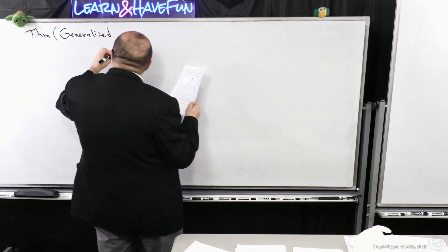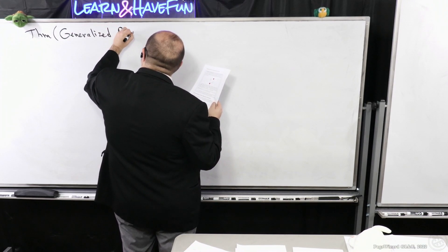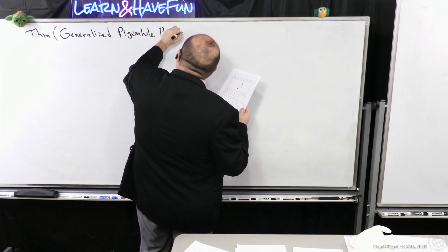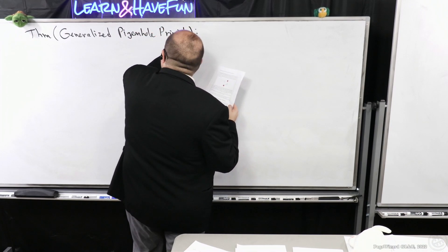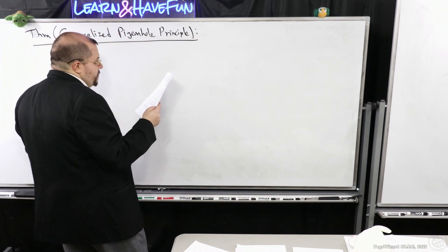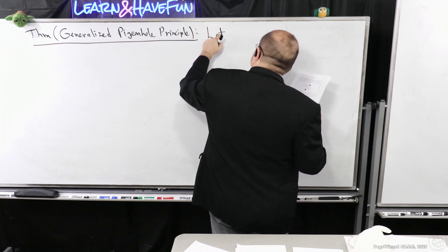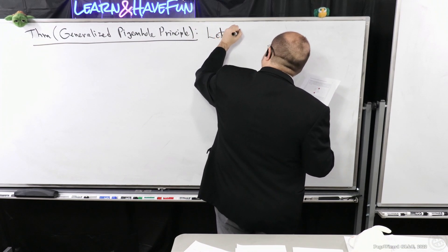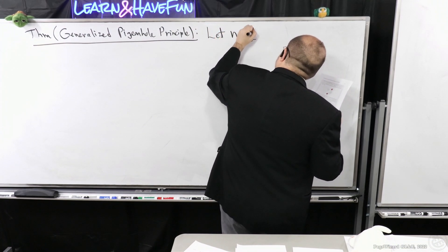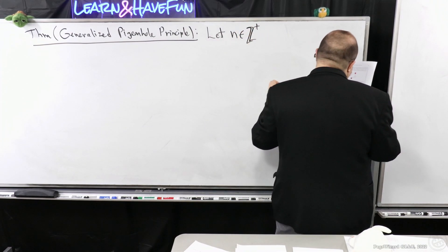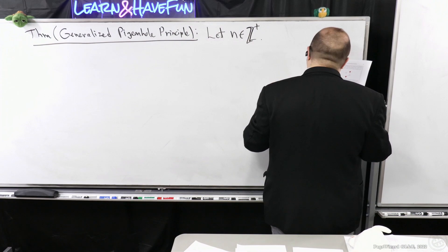So I'm going to refer to this as the generalized pigeonhole principle. I'm going to let n be a positive integer just to make this a little easier to play around with. This is the set of all integers but I'm adding the plus just to say it's all the positive integers, so it's one and above.